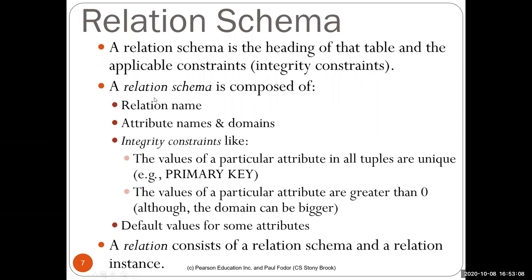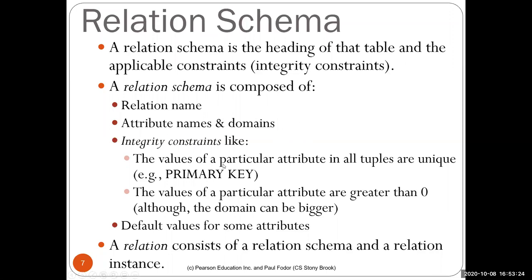A schema consists of: the relation name (the table name, like student, transcripts, or departments), attribute names and their domains, and integrity constraints. There are intra-relational constraints — like a primary key ensuring no two students have the same ID — and inter-relational constraints like a foreign key, which must have a corresponding candidate key or primary key in another table. For example, if you're referring to a department from teaching, that department must exist in the department table.